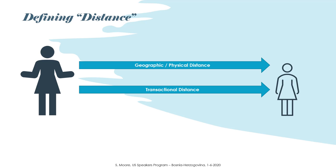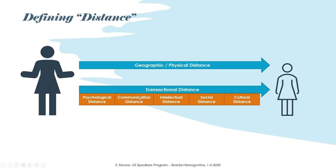Often when we think about distance, we may think about geographic or physical distance. But Michael Moore, as far back as 1990, in studying online learning developed the idea of transactional distance, which really captures the psychological and communication distance between the teacher and the learner. Different types of distances may exist in a learning environment: psychological distance, communication, intellectual distance, social distance, cultural distance — these have all been identified in the research.